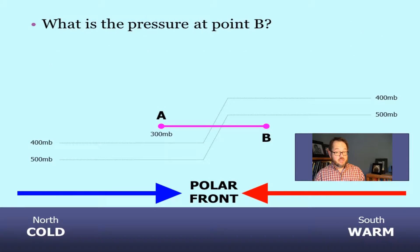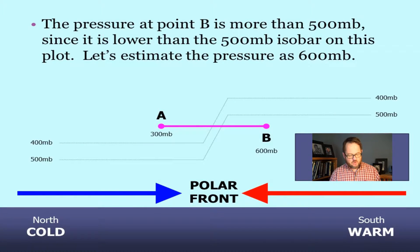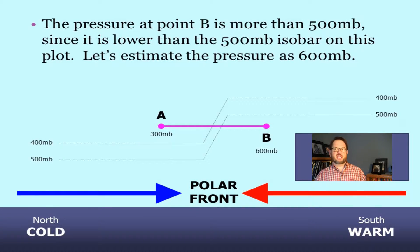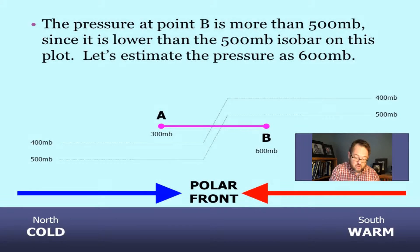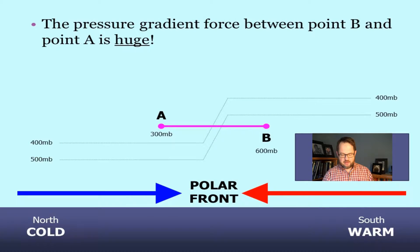Now let's do the same for point B. Point B is the same number of meters above the ground as point A, but it's on the warm side of the polar front. Looking at the diagram, B is closer to the ground than the 500 millibar surface is — 500 millibars on the warm side is higher than B. So the pressure at B has to be more than 500 millibars. For our thought problem, let's say 600 millibars. At a given height, we have two very different pressures on the cold side versus the warm side of the polar front. That's a pressure gradient — in fact, that's a huge pressure gradient. We've changed the pressure by about 300 millibars across a relatively short distance.